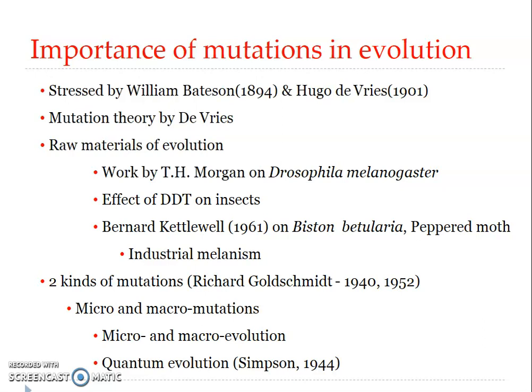Morgan also discovered that the frequency of mutation could be increased in the progeny of flies treated with X-rays. Experiments showed that mutation frequency can be induced and increased. Other factors such as high-energy radiations, chemicals like mustard gas, and even high temperatures can also cause mutations.